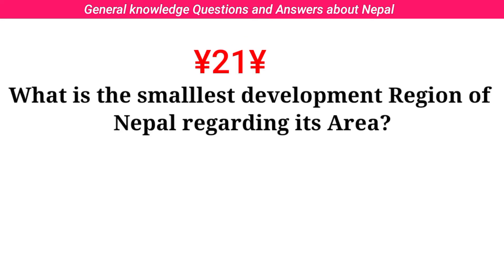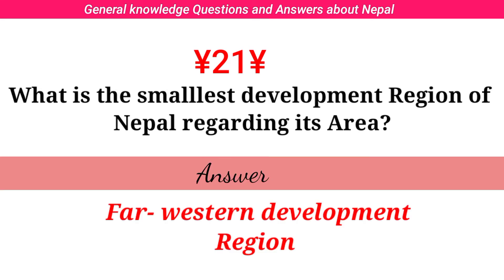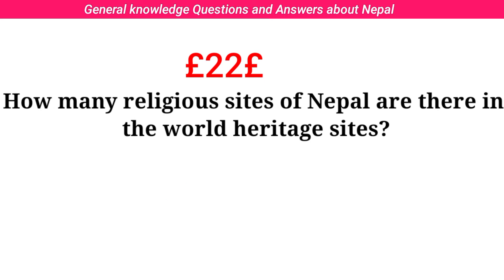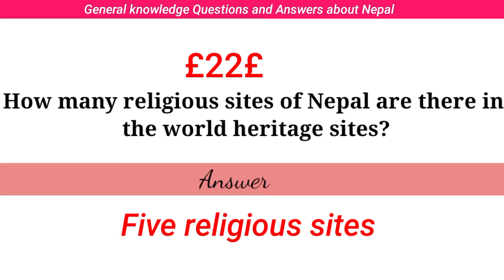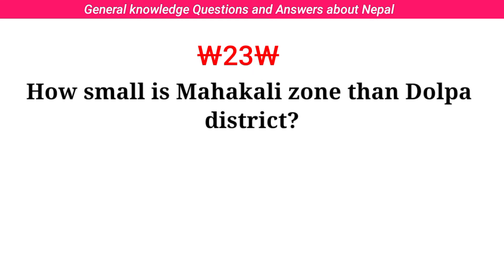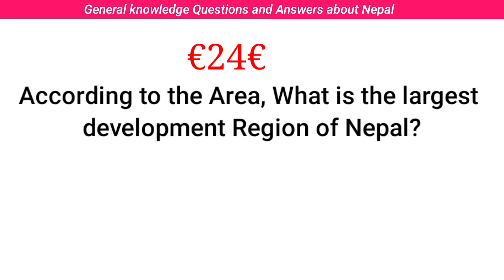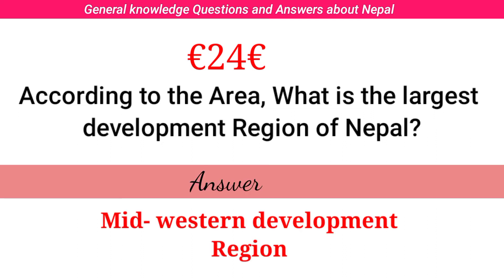What is the smallest development region of Nepal regarding its area? Answer: the Far Western Development Region. How many religious sites of Nepal are there in the World Heritage Site? Answer: 5 religious sites. How small is Mahakali Zone than Dolpa District? Answer: by 900 square kilometers. According to area, what is the largest development region of Nepal? Answer: the Mid-Western Development Region.